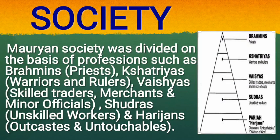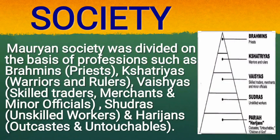Society: Mauryan society was divided on the basis of professions — Brahmins (priests), Kshatriyas (warriors and rulers), Vaishyas (skilled traders, merchants and minor officials), and Sudras (unskilled workers).